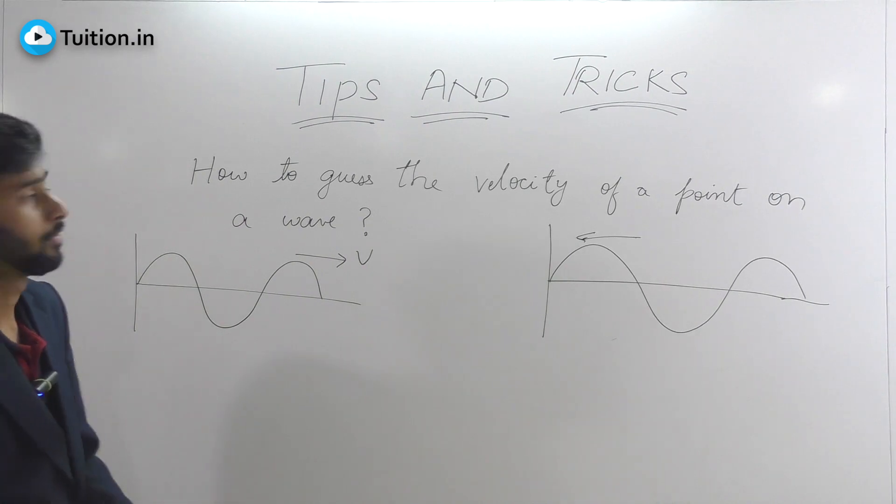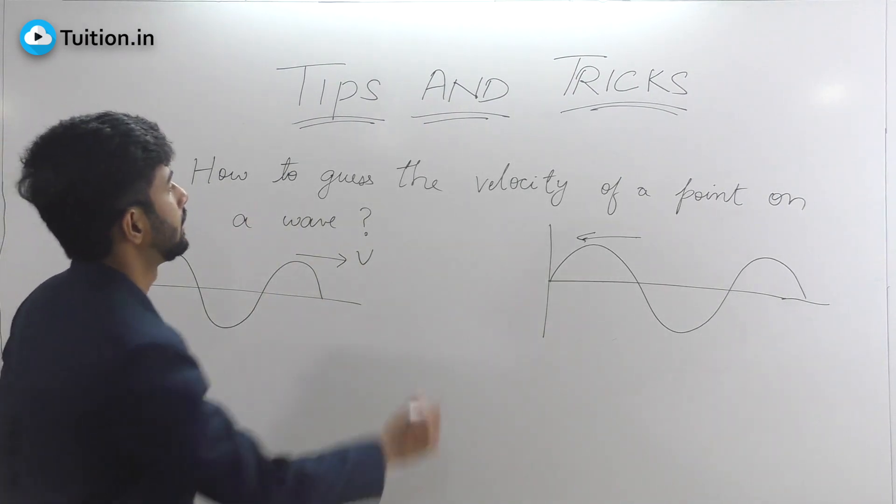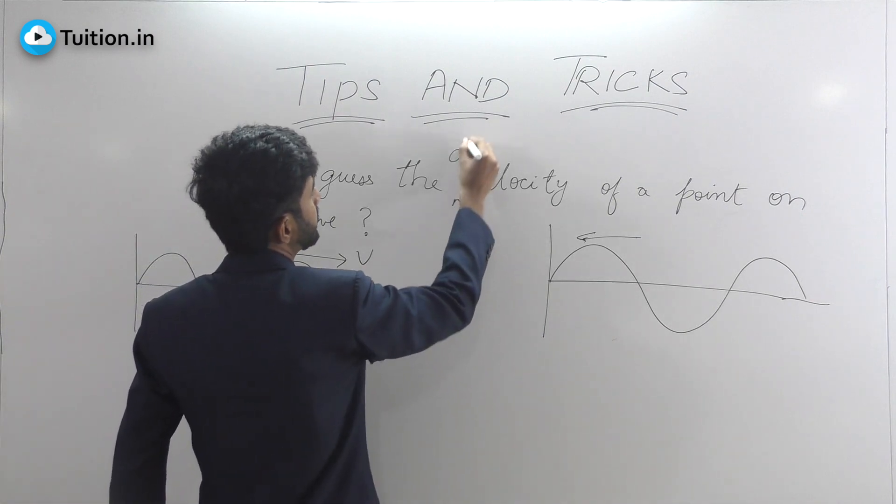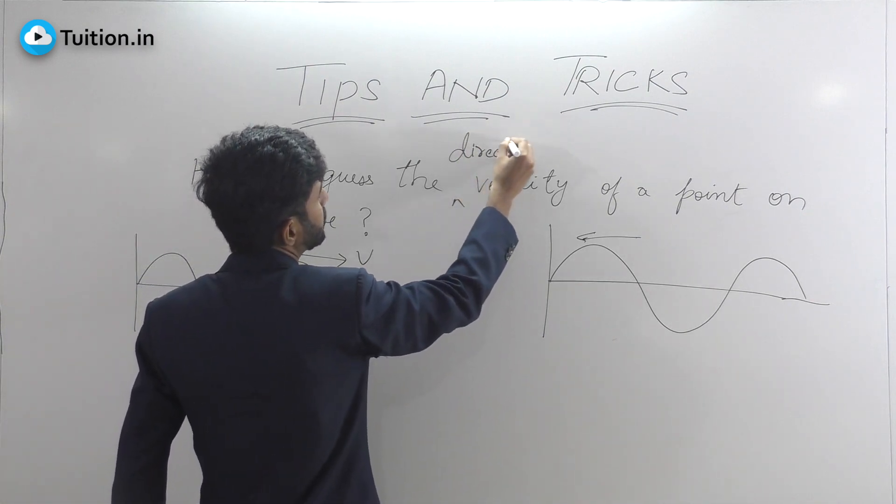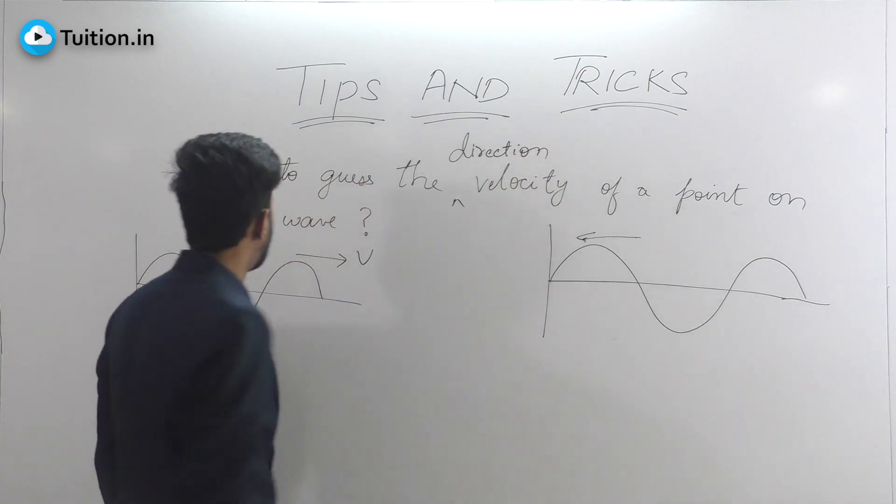Let us discuss a very useful trick to find the direction of velocity of a point on a wave. Let me just modify this: this is nothing but that direction. This cannot give you the magnitude, but it can tell you whether the point is moving up or down.